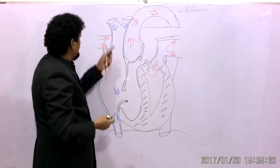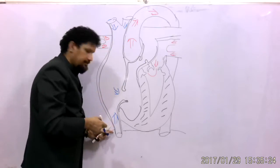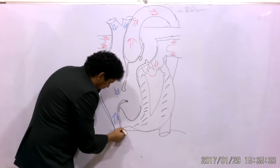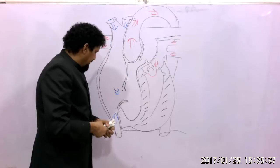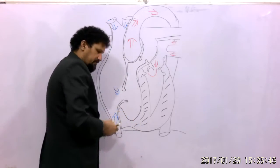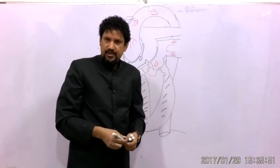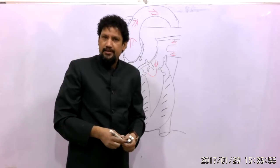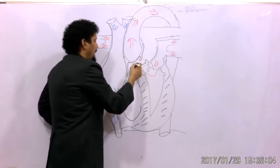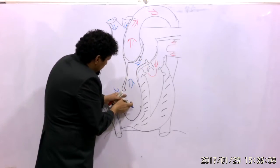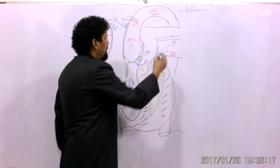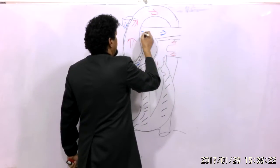Blood enters the right atrium through the superior vena cava and the inferior vena cava, which has almost no thoracic course — as it enters through the diaphragmatic opening of the inferior vena cava it enters the right atrium. Please don't use the word 'deoxygenated blood' — there is no such condition in the body as deoxygenated blood. The poorly oxygenated blood forms an obtuse angle entering the right ventricle, and after forming that obtuse angle, it leaves the heart through the pulmonary trunk, which divides into the left pulmonary artery and the right pulmonary artery.